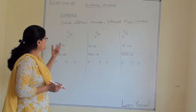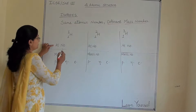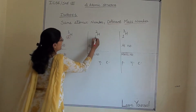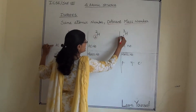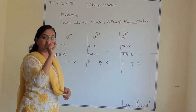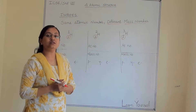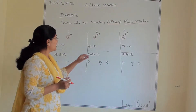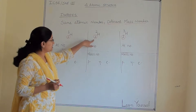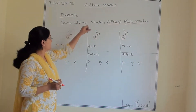What is the difference in their atomic numbers? When we represent any element, we write the atomic number at the bottom and the mass number at the top. So in subscript we write the atomic number, and in superscript we write the mass number.